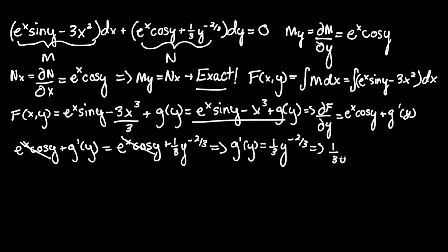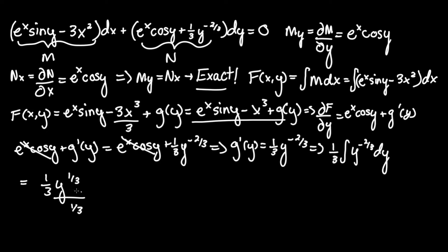This becomes one-third times the integral of y to the negative two-thirds dy, bringing the one-third out as a constant. We raise the exponent by one: negative two-thirds plus one equals one-third. So we get one-third times y to the one-third over one-third. The one-third coefficient and the one-third denominator cancel, giving g of y equals y to the one-third, which is also the cube root of y.